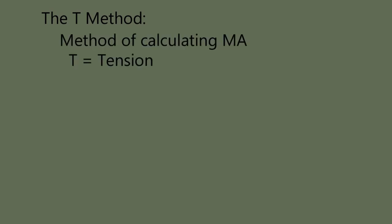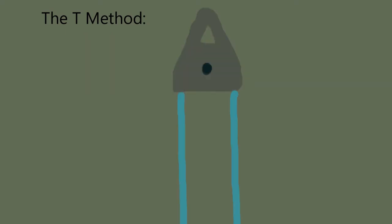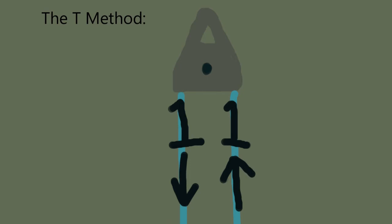The T-method is a method of calculating mechanical advantage, and you can think of T as tension. In this illustration, we have a teal rope feeding into and out of a silver pulley. The way the T-method works: whatever value you have entering the pulley also exits the pulley. So if you pull down on the left side of that rope, you're pulling with a value of 1. Since you have 1 entering the pulley, you also have 1 exiting the pulley. Add 1 and 1 together and you get 2, so that pulley is seeing a load value of 2.